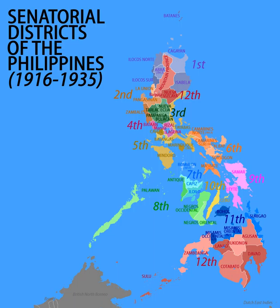Sixth District — Provinces: Albay, Ambos Camarines, Sorsogon. Later additional provinces: Camarines Norte and Camarines Sur, resulted from the division of Ambos Camarines in 1917; Masbate, separated from Sorsogon in 1917.